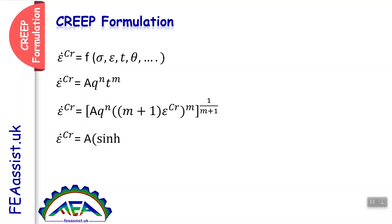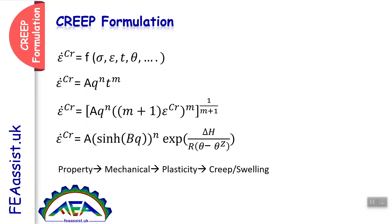Another form of the CRIP function is the sinus hyperbolic function, in which CRIP is a function of deviatoric stress, energy, and temperature. You can go to Abacus, go to property, mechanical section, plasticity, and there you can see the CRIP and swelling option. In that section, you can enter all these parameters and predict the behavior.